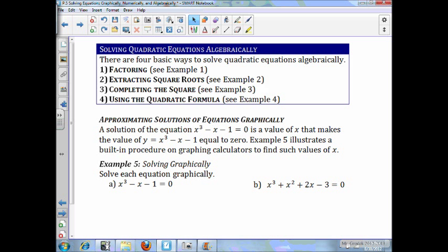so 6 square root of 2 over 2, which will simplify to negative 4 plus or minus 3 square root of 2. Now, there are four basic ways to solve quadratic equations algebraically. Factoring, in example 1, extracting square roots like we did in the example 2, completed the square, which is like example 3, and using the quadratic formula that we just did in the example 4.